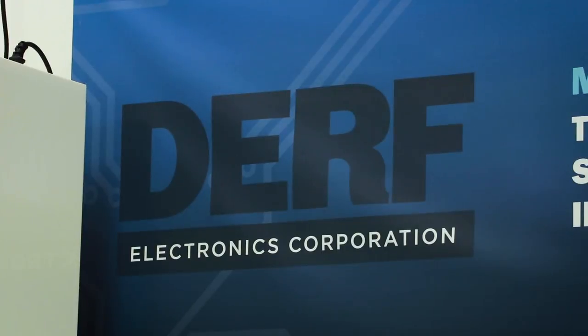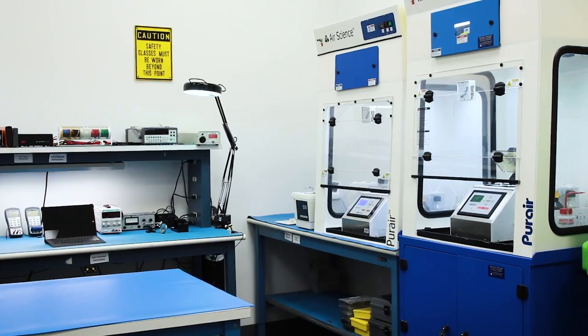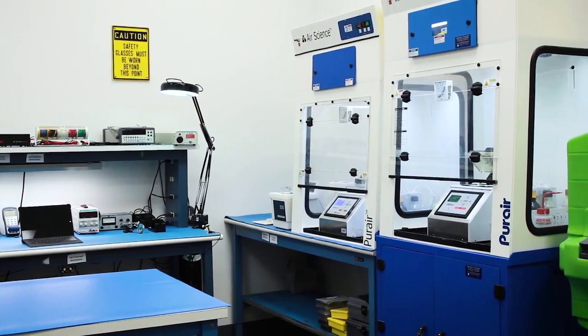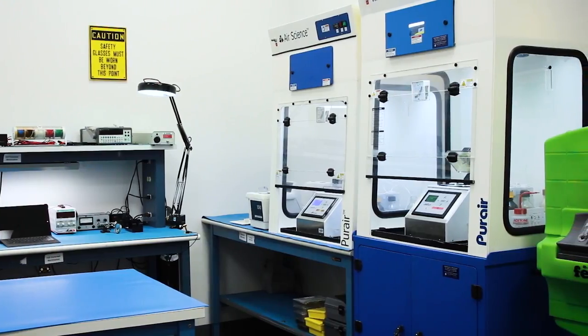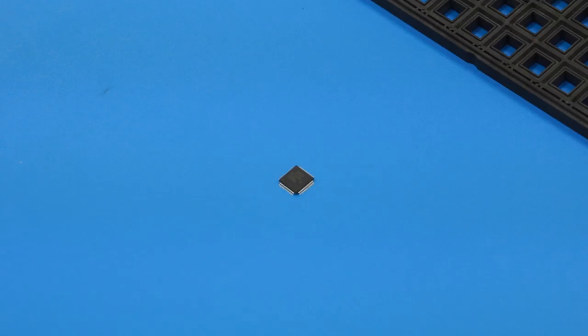DERF is an excess inventory specialist. We act as a normal distribution. However, our material comes from tier one or large contract manufacturers or anywhere that they have over-speculated on how much they should buy. Typically, it comes in, we inspect it, we check it in, we count it, we inventory it.